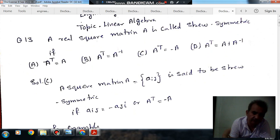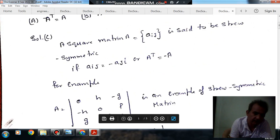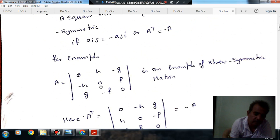So, a square matrix is a skew symmetric matrix when each of its elements, suppose A_ij is equal to minus A_ji, or in other words, A transpose is equal to minus A.